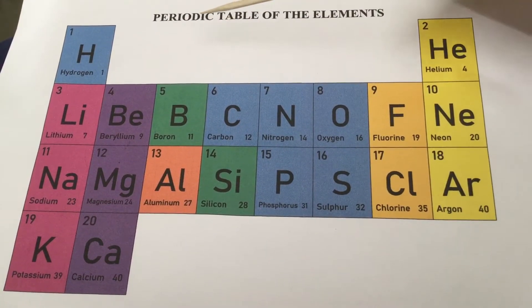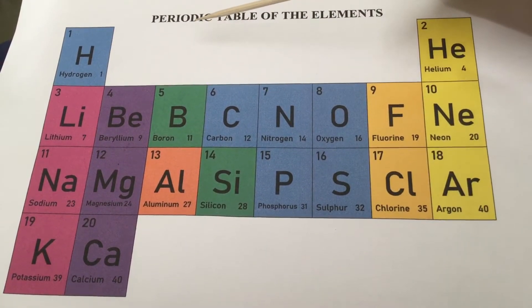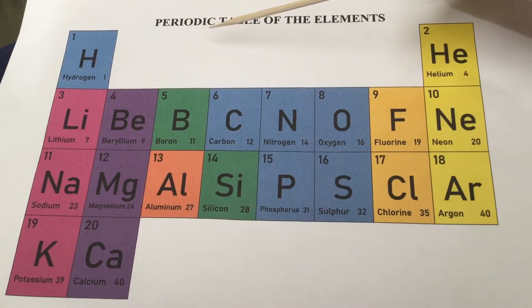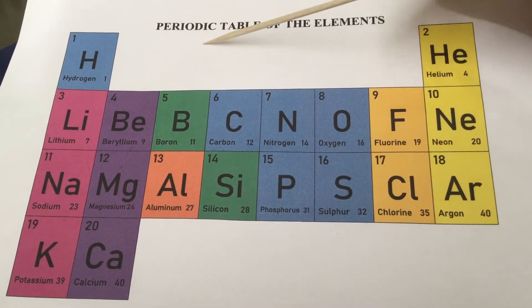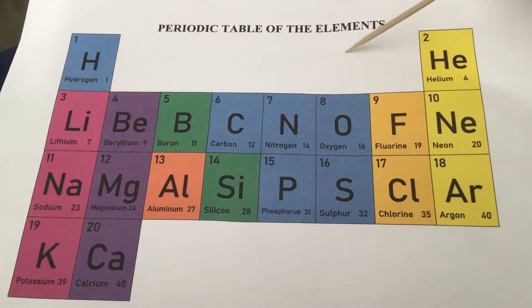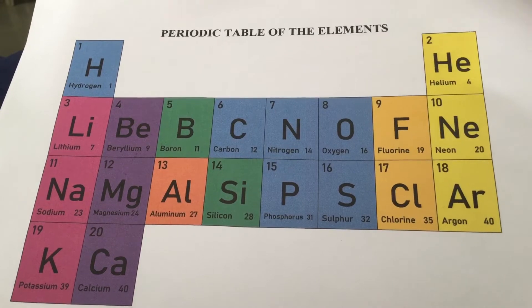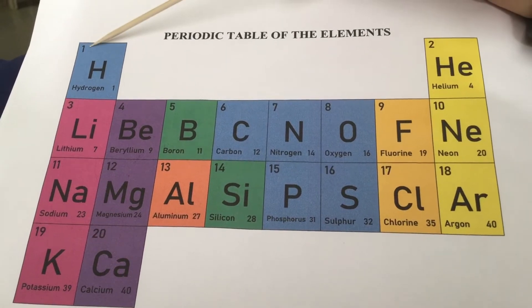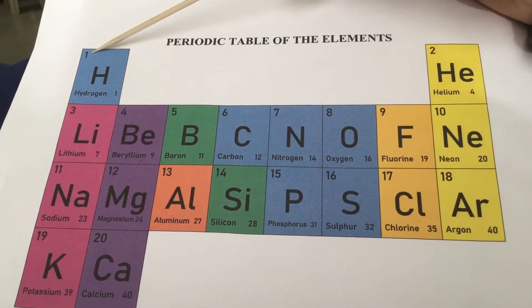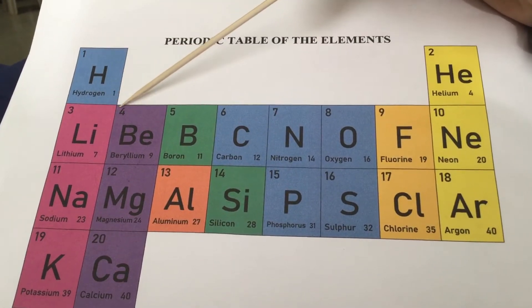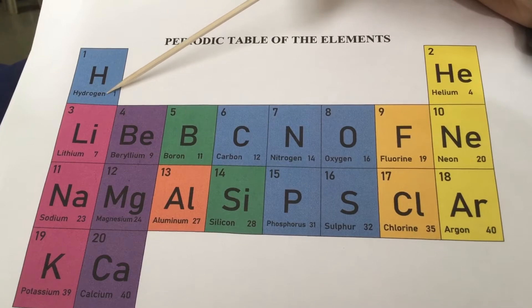These are the first 20 elements in the periodic table by number, element, and mass — masses rounded.